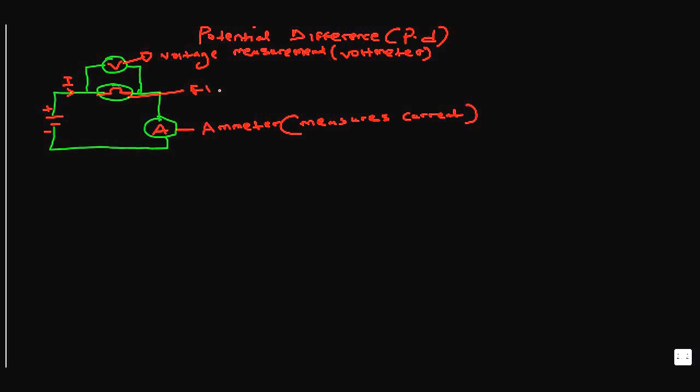Here we have a filament lamp. Voltage and current are not the only two things you can measure in a circuit — you can also measure resistance, using an instrument called an ohmmeter.